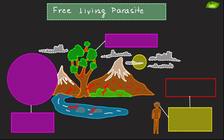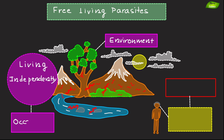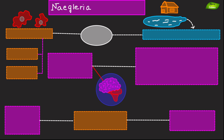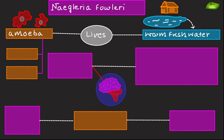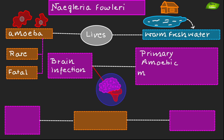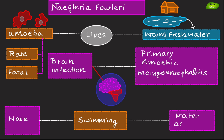Free-living parasites are capable of living independently in the environment but can occasionally infect hosts. Naegleria fowleri is an amoeba that normally lives in warm fresh water but can cause a rare and usually fatal brain infection called primary amoebic meningoencephalitis when it enters the nose during swimming or other water activities.